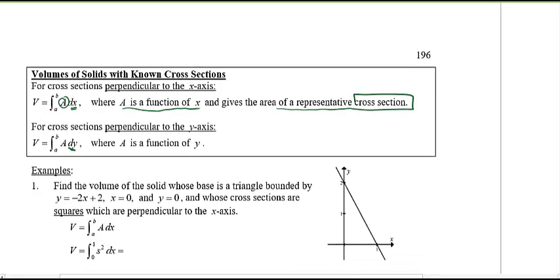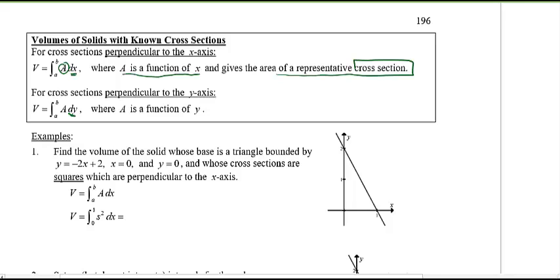Let's look at example number one. Find the volume of the solid whose base is a triangle bounded by y equals negative 2x plus 2, x equals 0, and y equals 0. The base is a triangle. And whose cross sections are squares which are perpendicular to the x-axis — so when I draw the slice coming out of the page, it's a square.